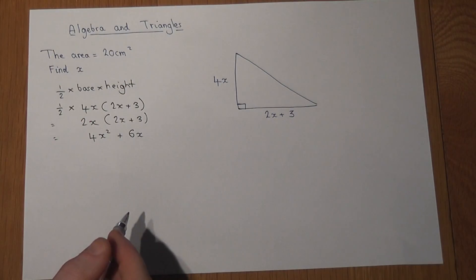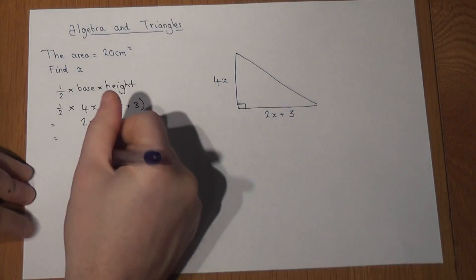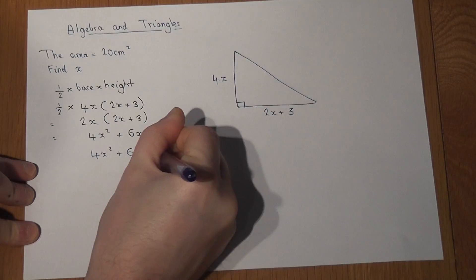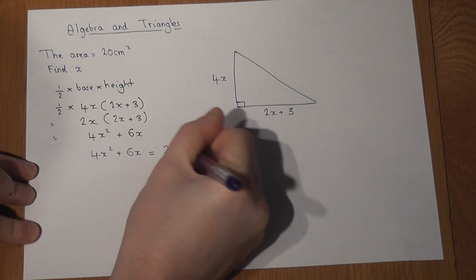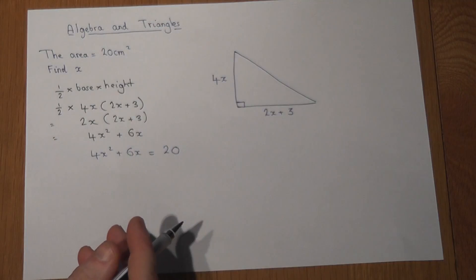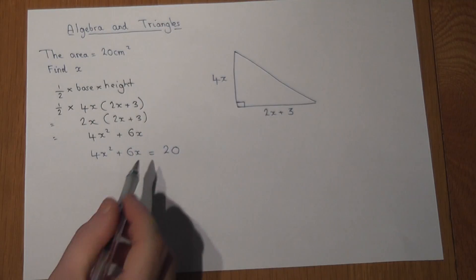Now we know the area, so I can set up an equation. 4x squared plus 6x has got to equal 20. We're told the area equals 20. So to find x, I need to solve this equation.